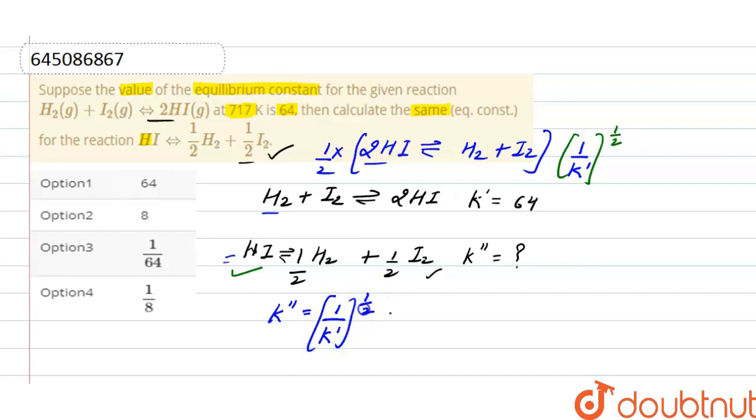And here equilibrium constant for first reaction is given, that is 64, and it will raise to the power 1 by 2. And after solving, it will be 1 by 8.